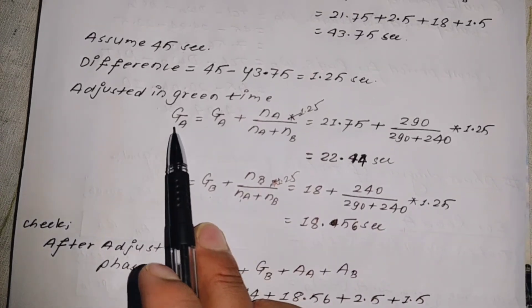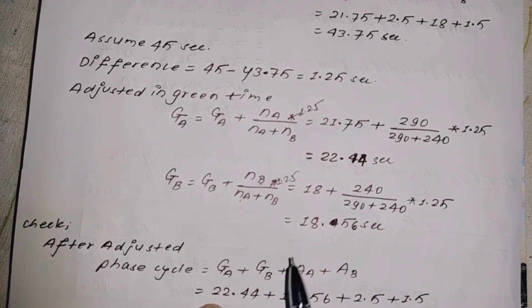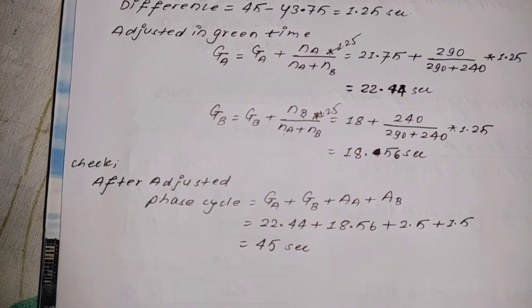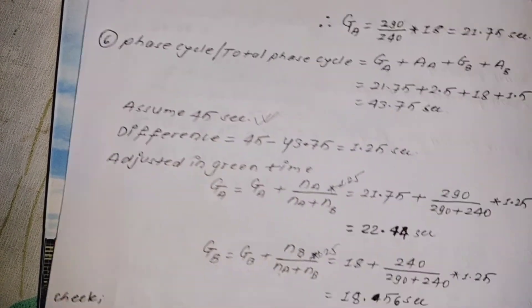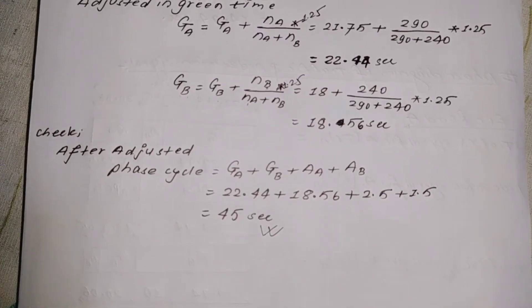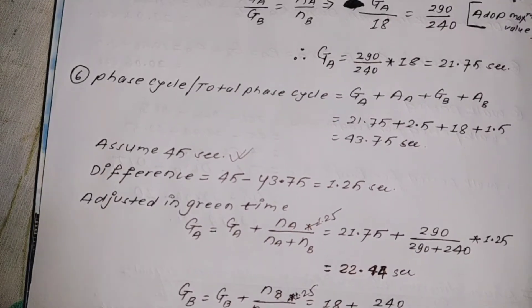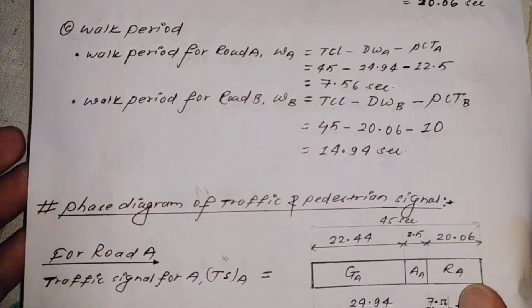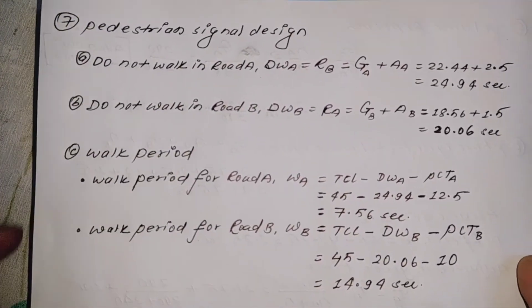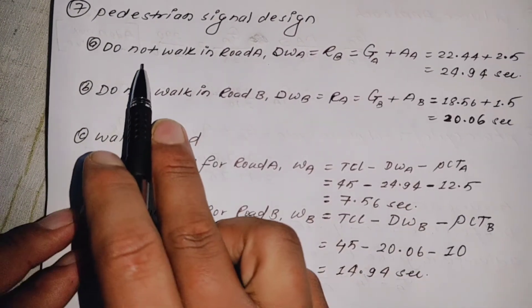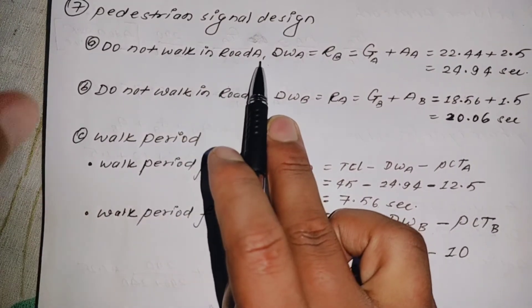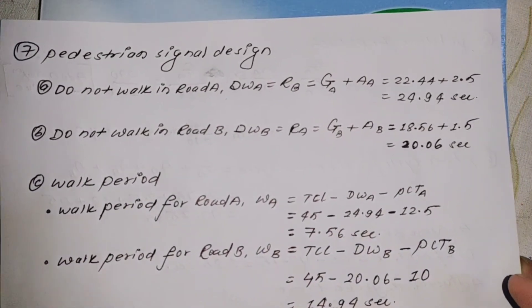Now, step six: pedestrian signal design calculation. We need to find the 'Do Not Walk' and 'Walk' periods for both roads. The procedure follows the method described in the previous procedure video.